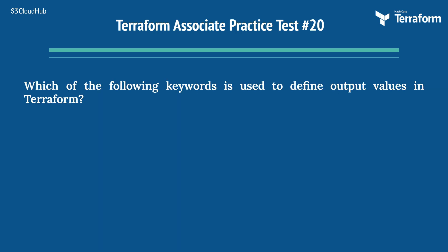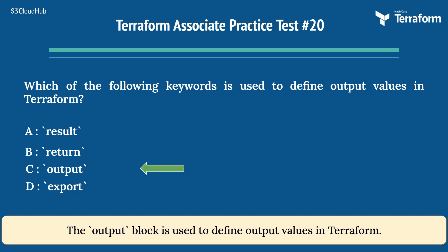The twentieth question is: which of the following keywords is used to define output values in Terraform? Option A: result. Option B: return. Option C: output. Option D: export. The right answer is Option C: output. The output block is used to define output values in Terraform.